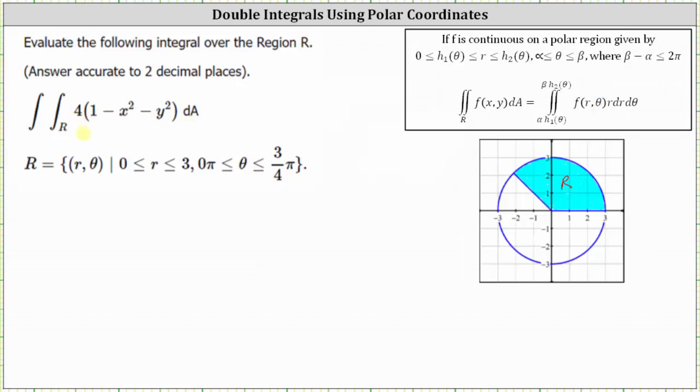So to begin, we can write the integrand function as four times the quantity one minus the quantity x squared plus y squared. This is helpful because x squared plus y squared is equal to R squared. So in polar form...